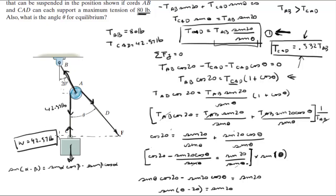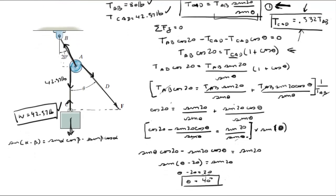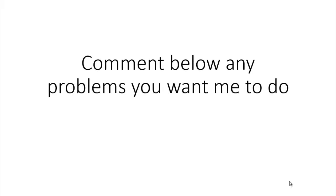Final answer: tension AB equals 80 pounds, tension CAD equals 42.57 pounds, and the angle theta equals 40 degrees. Please comment below if you want me to do any problems and I'll be happy to help.